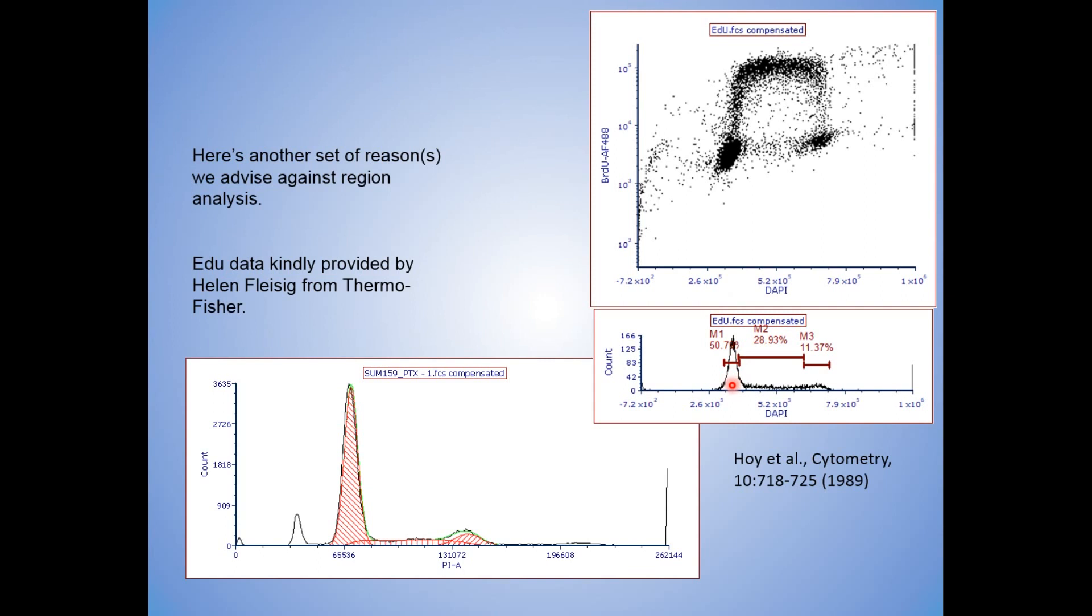But here's the region analysis. I have this here, S, G2M, G1, G0 here. I come all the way up. These guys right here are the G1, G0.